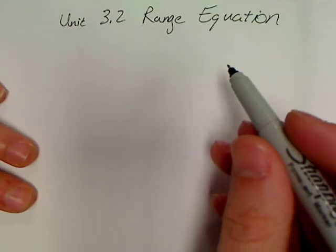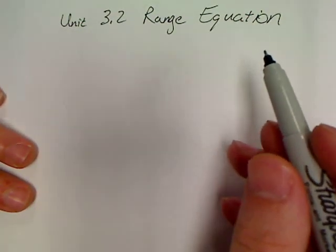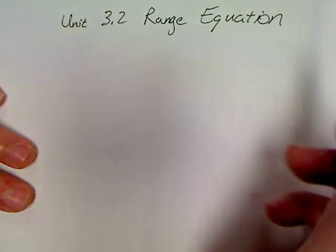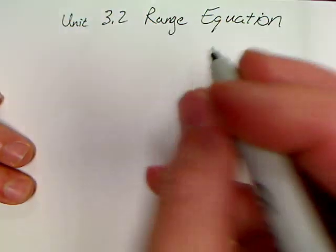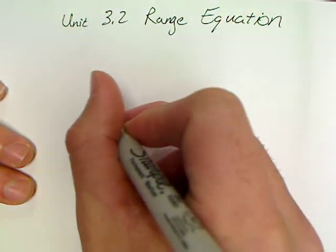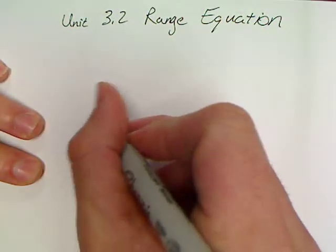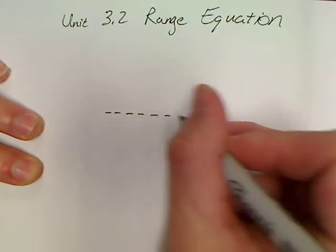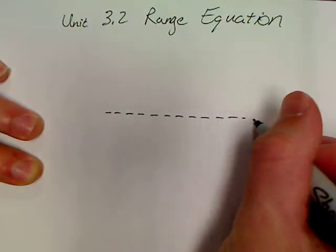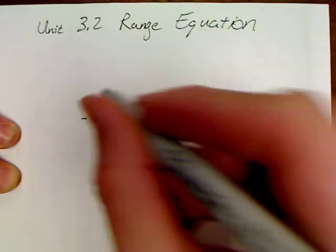All right. Today's lesson is on unit 3.2. This has to do with projectiles. This is often called the range equation. The range equation can come in useful, but students get carried away using it, and the reason why they get carried away using it is it can only be used for one type of problem.